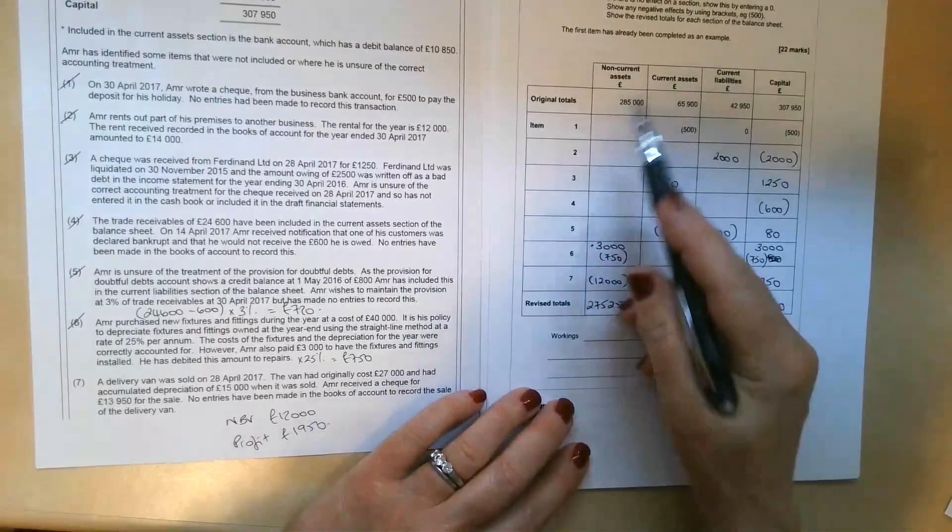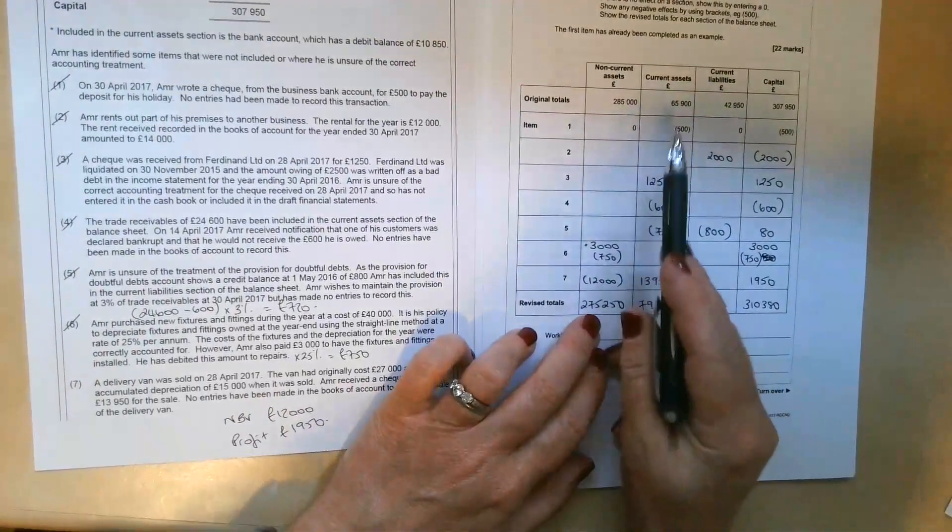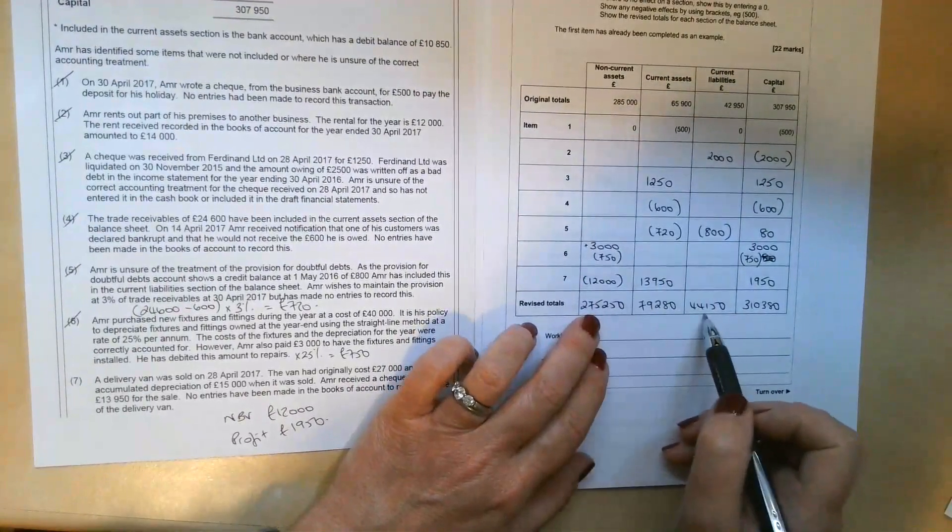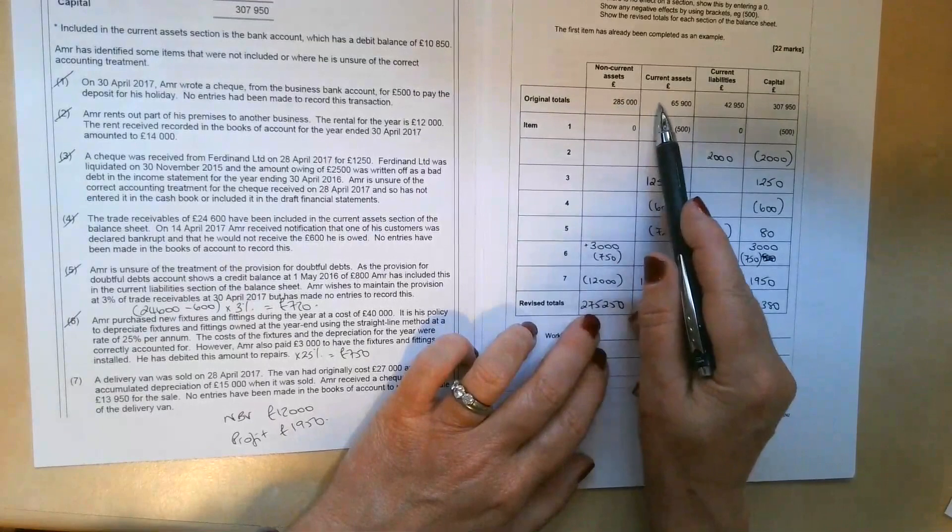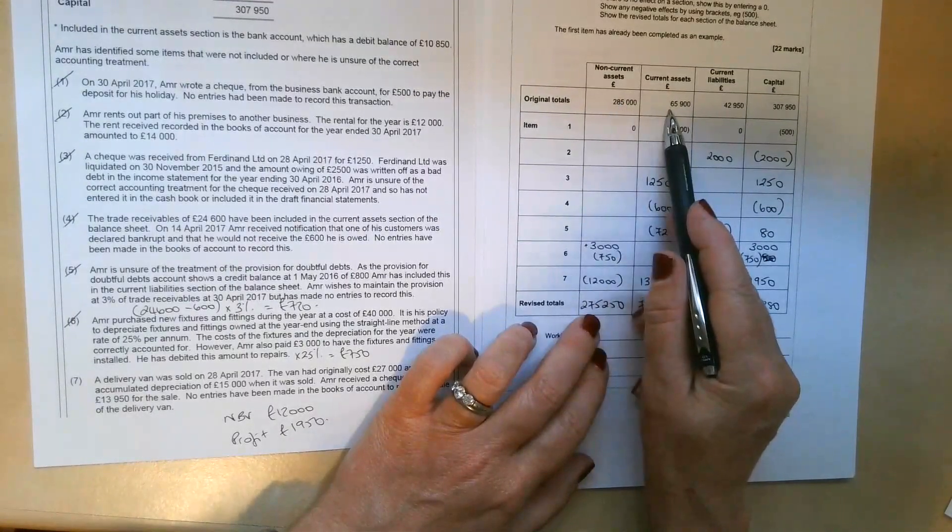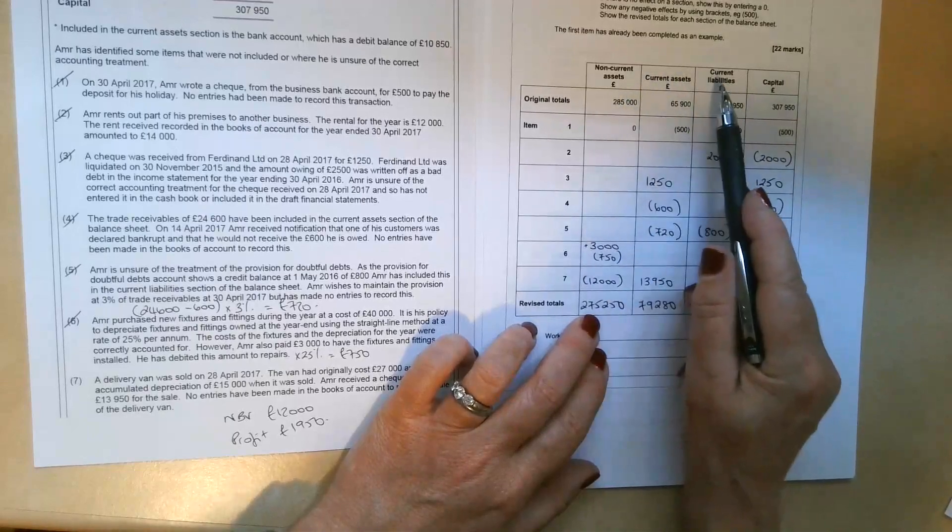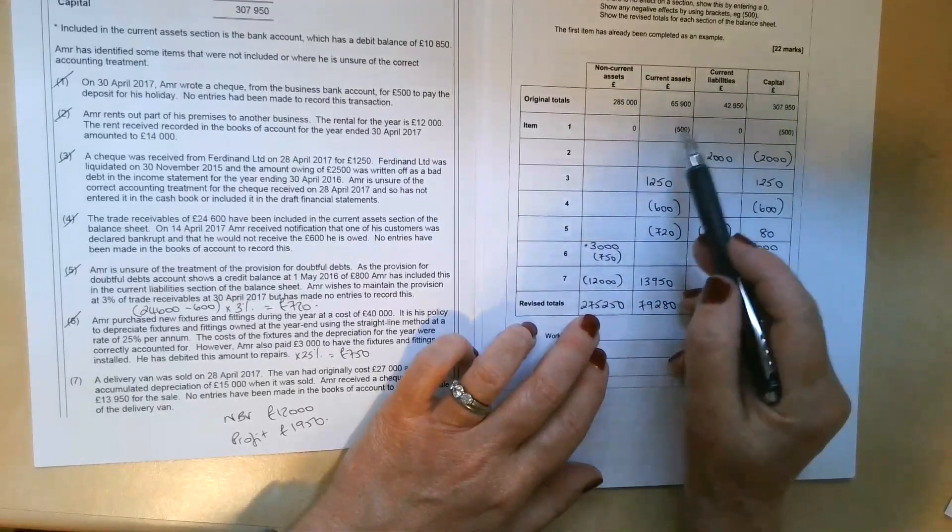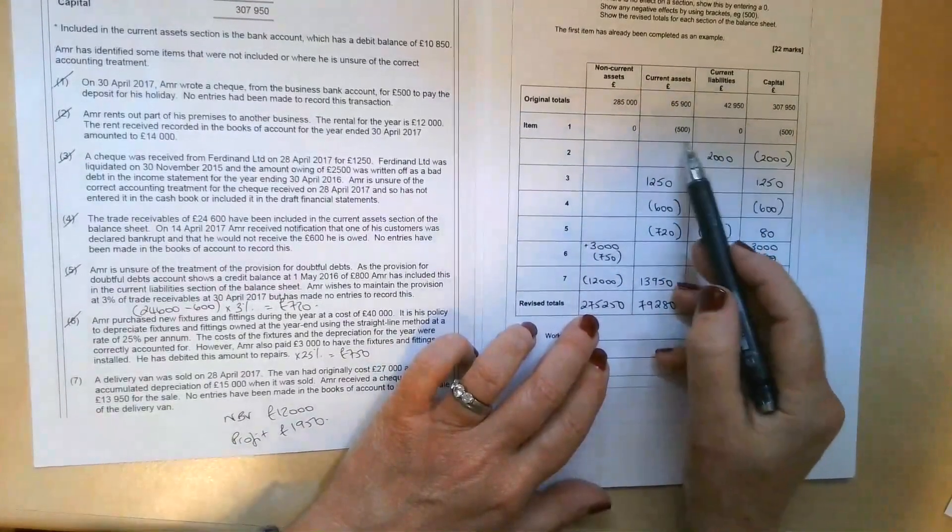So I paused the video while I added and subtracted all of these figures. So this is what we end up with for these revised totals. Now what we need to make sure is that the statement of financial position still agrees. So if you look up here, the non-current assets, if we add the non-current assets to the current assets, take away the current liabilities, we get back to capital. So remember assets minus liabilities equals capital.